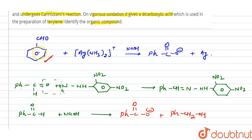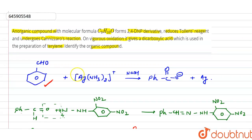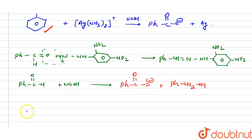So we have established the benzaldehyde unit. Along with that, two more carbons need to be added. The last clue is that on vigorous oxidation, it gives a dicarboxylic acid used to prepare terylene. Terylene is prepared from terephthalic acid, which has two acid groups at the first and fourth positions (para positions). So two carbons will be present at the fourth position.